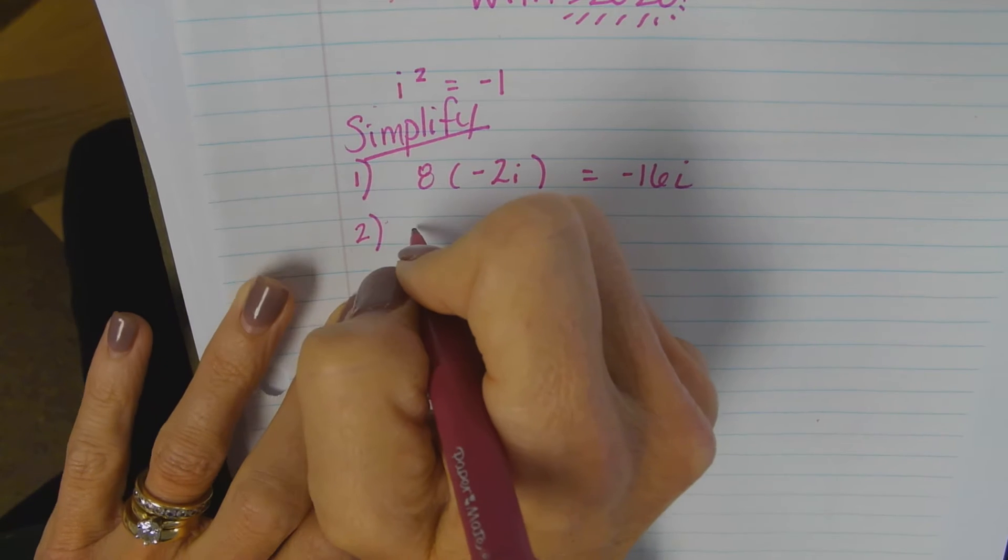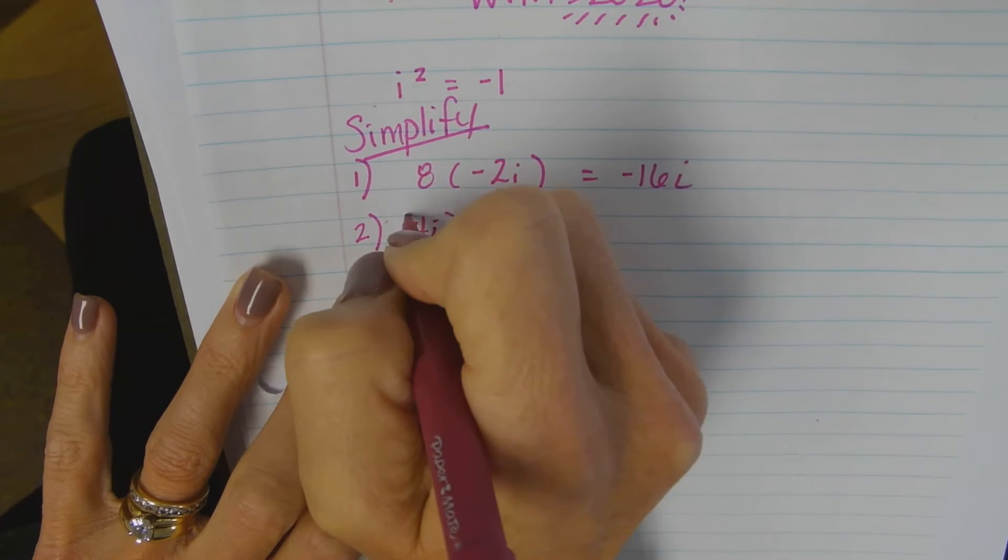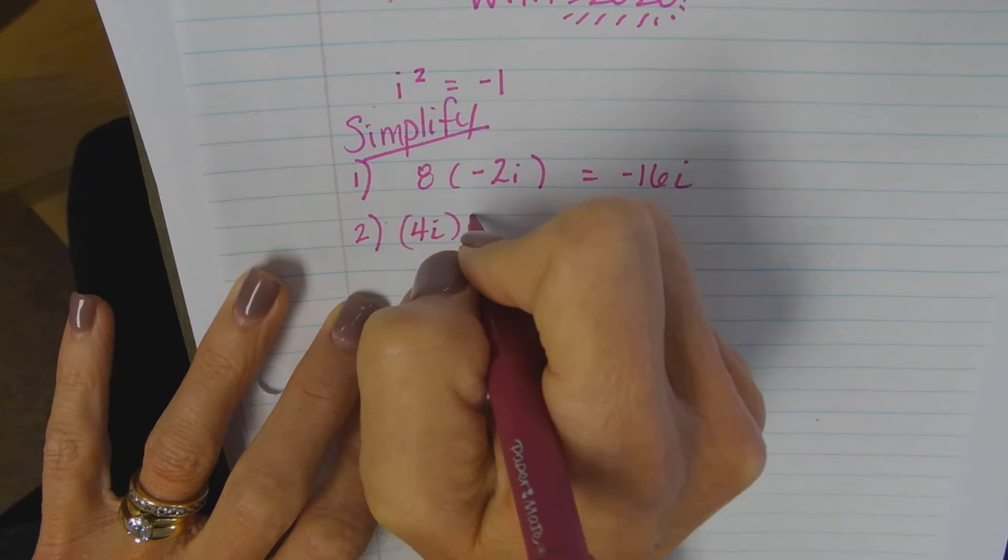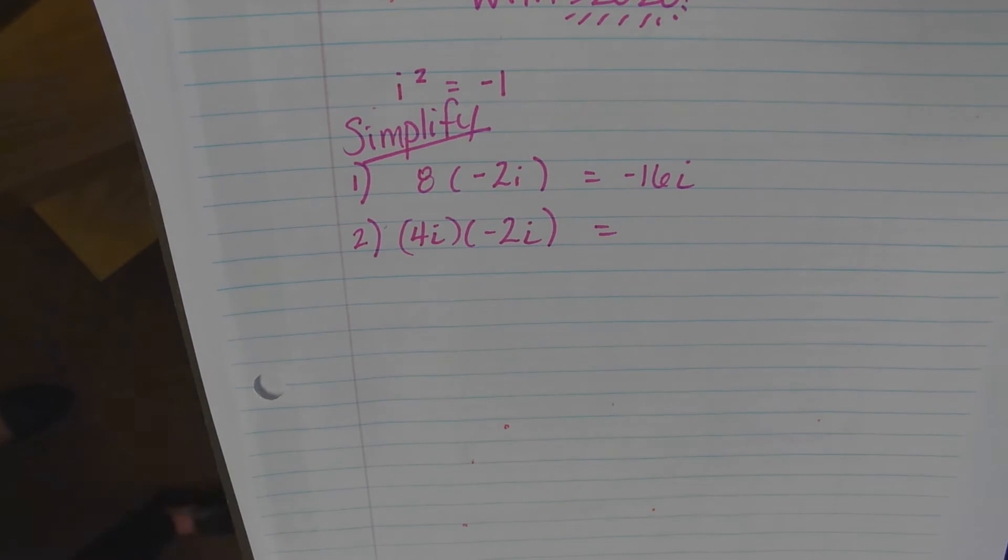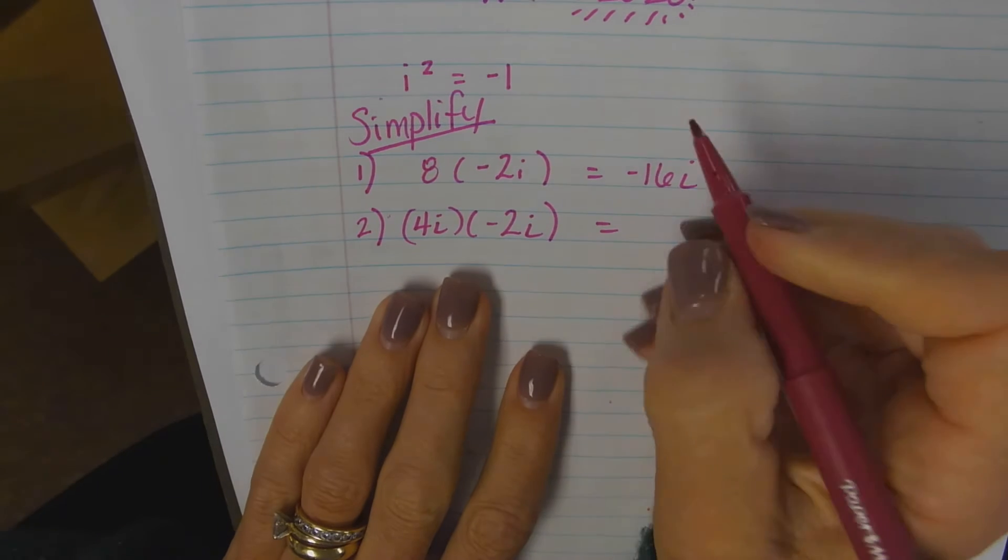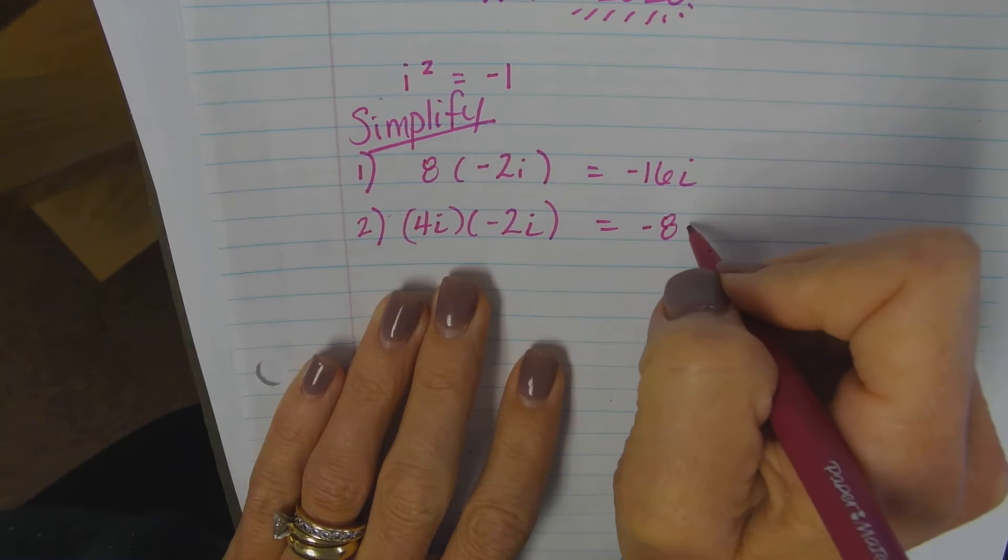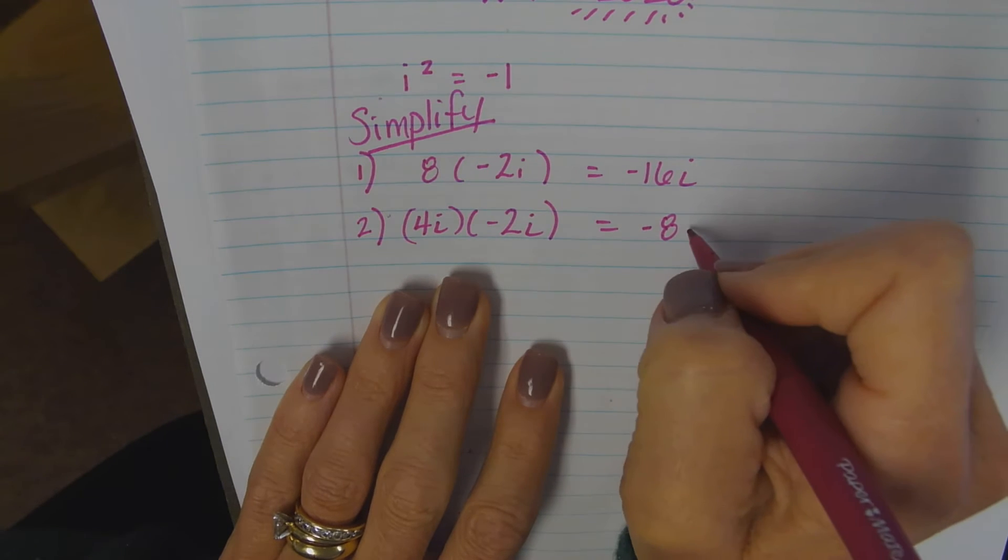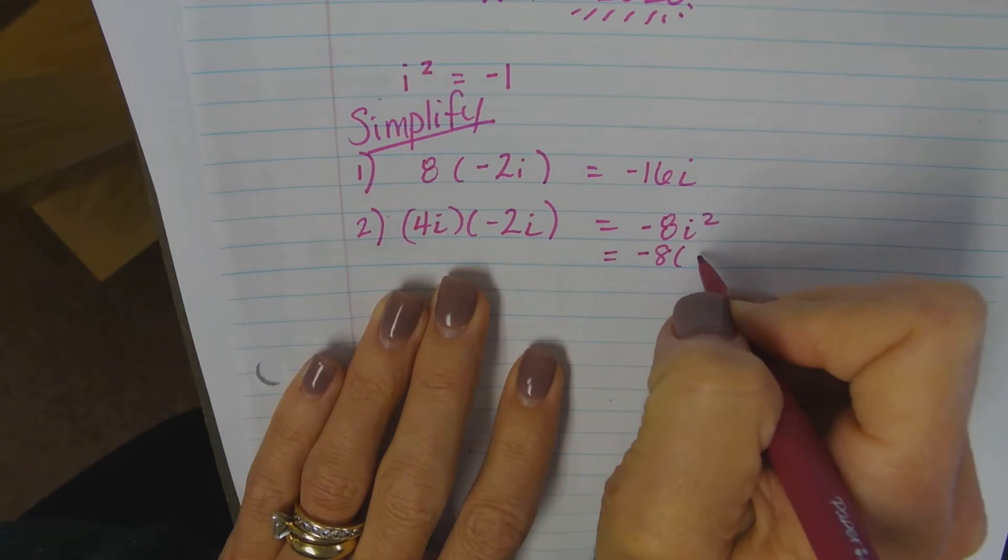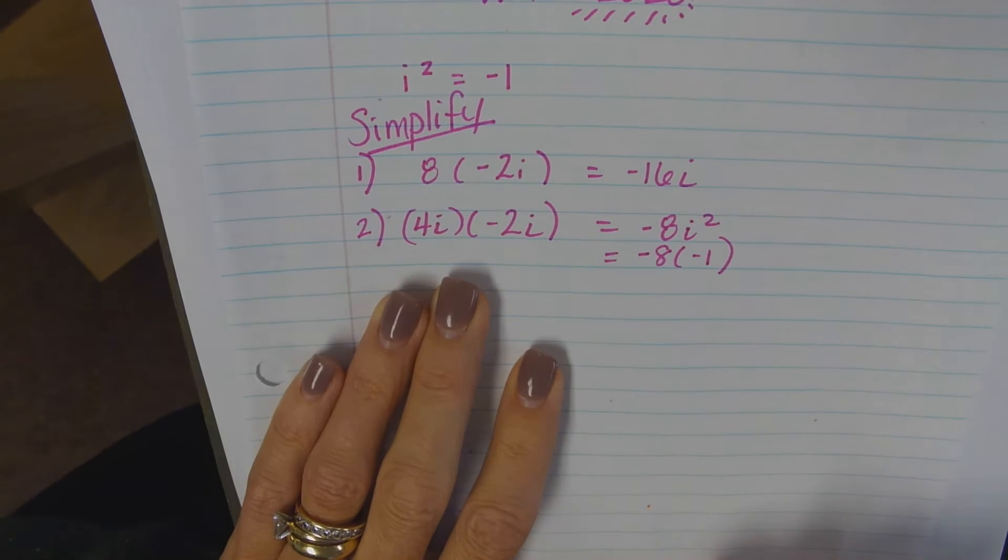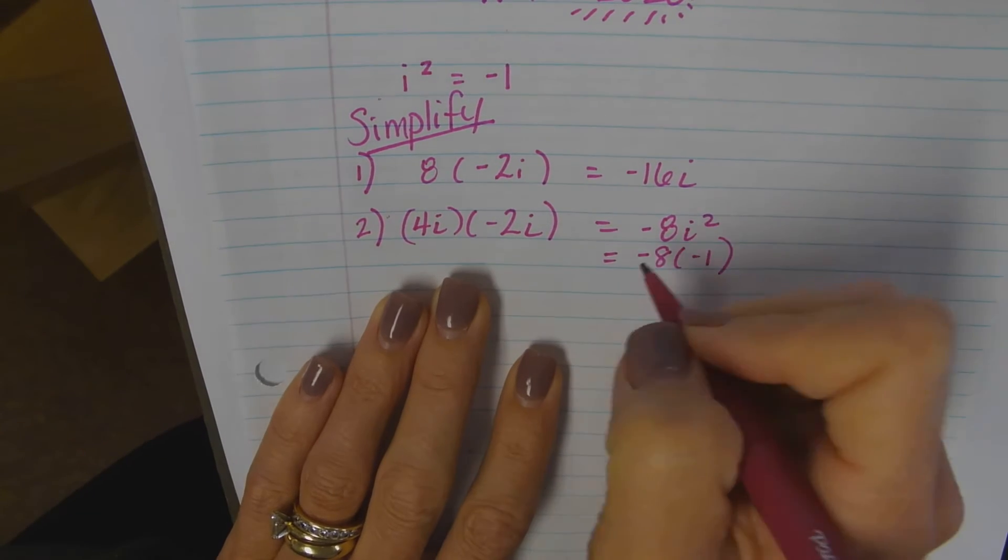Let's see 4i times negative 2i. Four times negative two is negative eight. i times i is i squared. So now we have negative eight times negative one, which is eight.